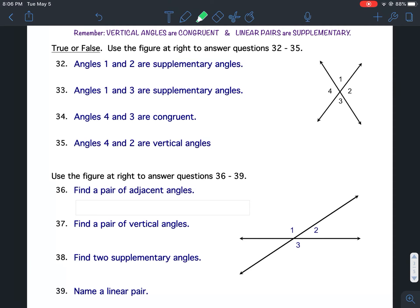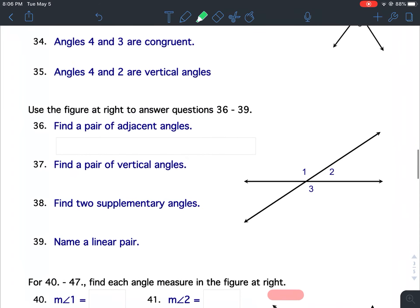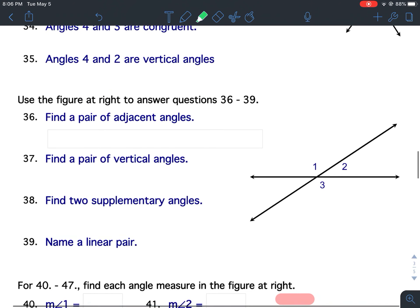Questions 36 through 39, use the figure at right to answer questions 36 through 39. Now do you see a number right here? No. So don't put one there. The only options you have are 1, 2, and 3 for your answers. Don't put a 4 here. Just 1, 2, and 3 are your only options.